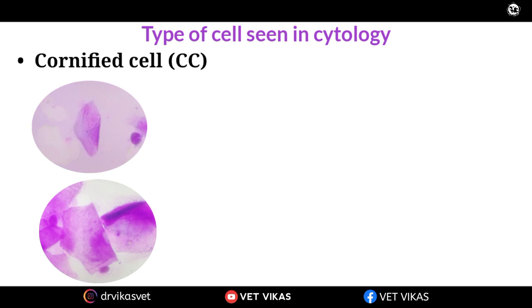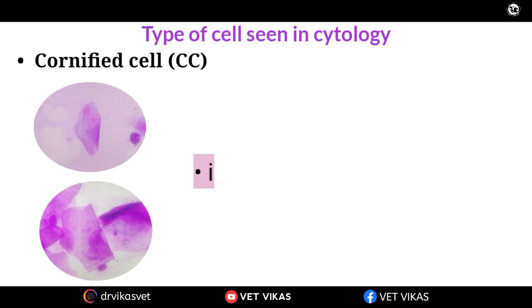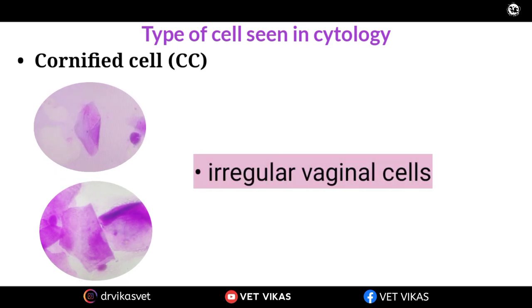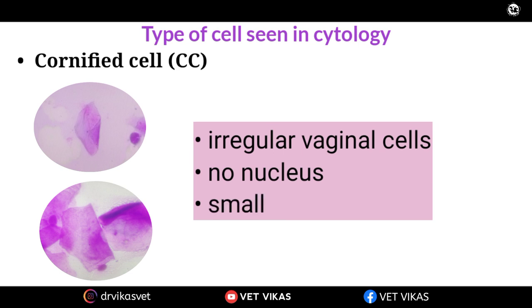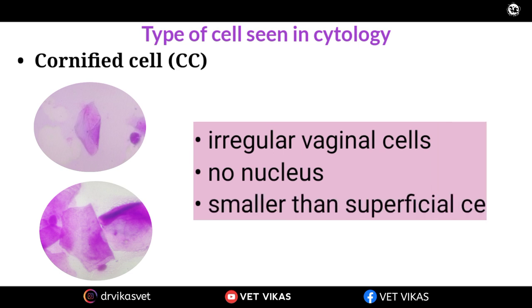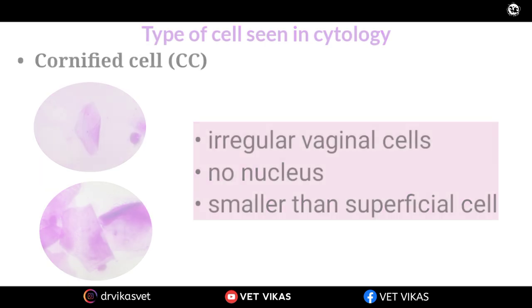The next one is the cornified cell. In the cornified cell the cytoplasmic border will be flat and angular, irregular in shape, and there will be no nucleus — only cytoplasm will be there in the cornified cell. So these five cells you will see in case of cytology.